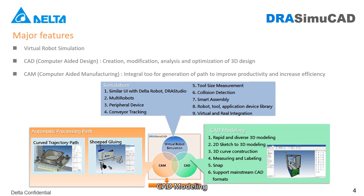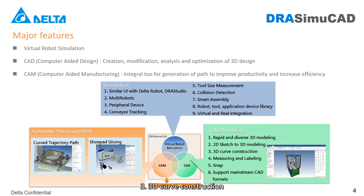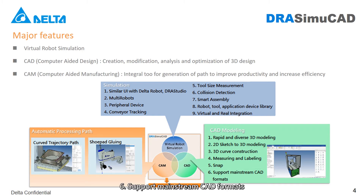CAD modelling features include: First, rapid and diverse 3D modelling. Second, 2D sketch to 3D modelling. Third, 3D curve construction. Fourth, measuring and labelling. Fifth, snap. Sixth, support for mainstream CAD formats.